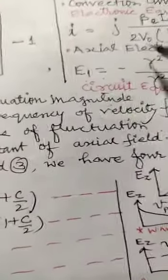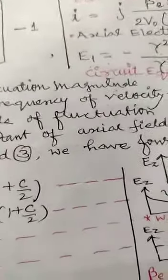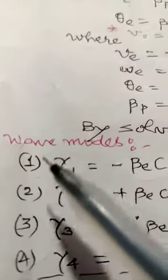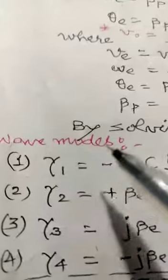In this video we are going to see the solution of the convection current formula and the axial field formula, which produces the four constants of propagation. These four propagation constants indicate the four wave modes which are represented by gamma 1, gamma 2, gamma 3, and gamma 4.